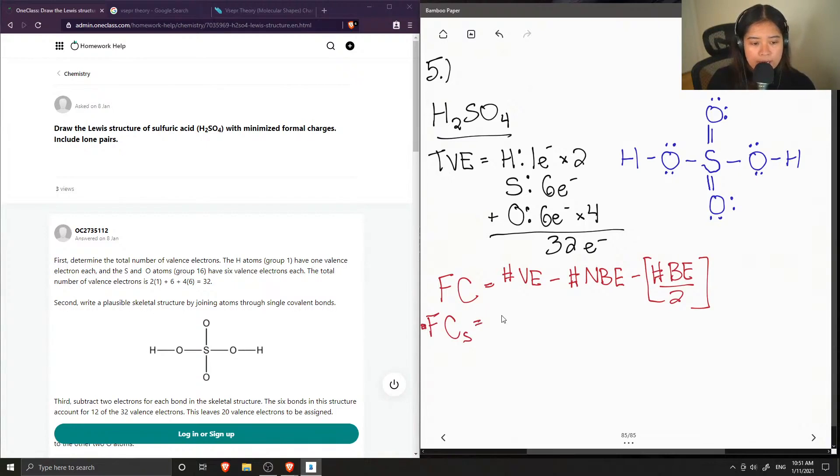So let's double check and calculate the formal charge on the sulfur atom. So sulfur has six valence electrons. And in this structure, there are no lone pairs on it. So the number of non-bonding electrons is zero. And for the bonding electrons, we have a total of six bonds. So that means there are 12 bonding electrons. And then we just divide it by two. So that means that sulfur is neutral.